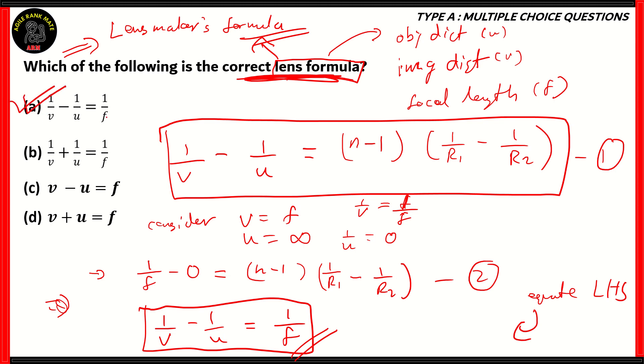So, therefore, option A, 1/V - 1/U = 1/F is the correct answer. The others are incorrect because, in option B, the sign is different, and in option C and D, it's V, U, and F instead of their inverses, so multiplicative inverses. It's V, U, and F instead of 1/V, 1/U, and 1/F.